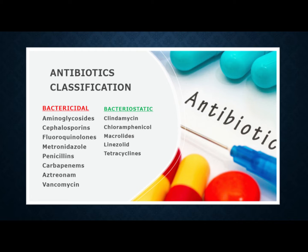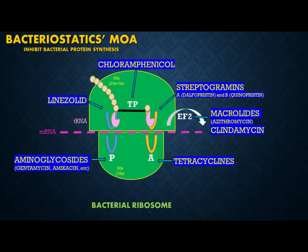As the name implies, bactericidal antibiotics are those that kill the bacteria directly, while bacteriostatic antibiotics limit the growth of the bacteria by interfering mainly with bacterial protein production. Here we will be reviewing the bacteriostatic antibiotics' mechanism of action.